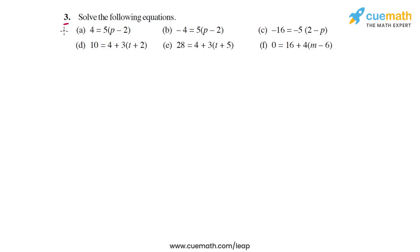In question 3, just like in the previous two questions, we have to solve a set of equations. The only difference is that in this question the variables are all coming on the right side. For example, in the first equation the variable p is on the right side, but that doesn't really matter — the LHS and the RHS could be interchanged and the equation will not change.